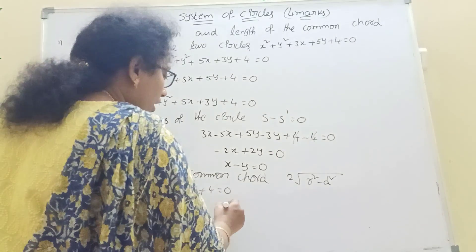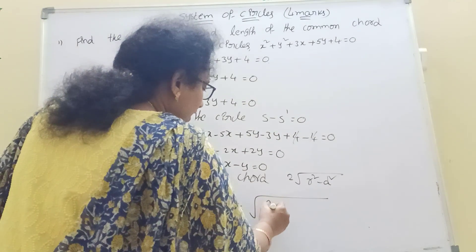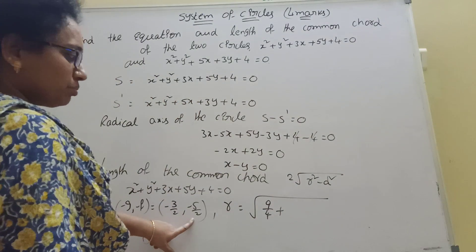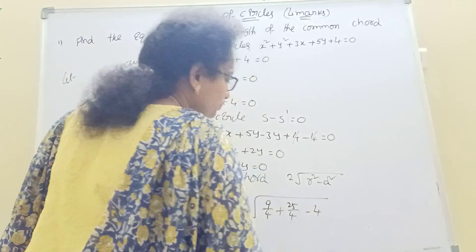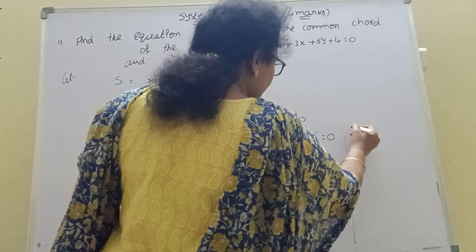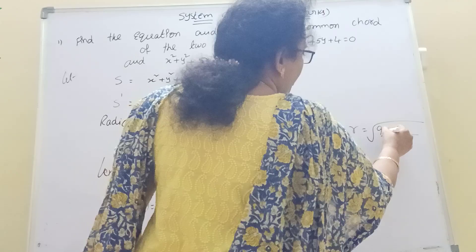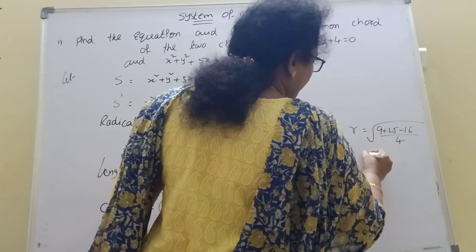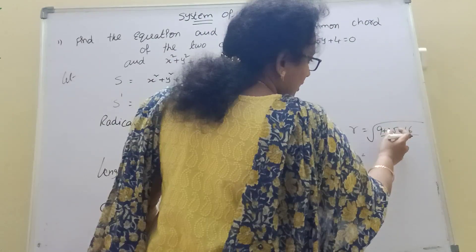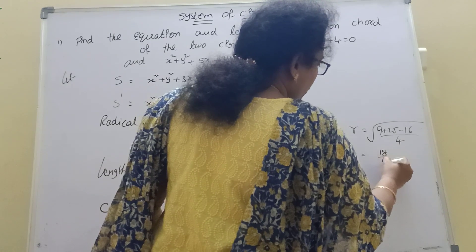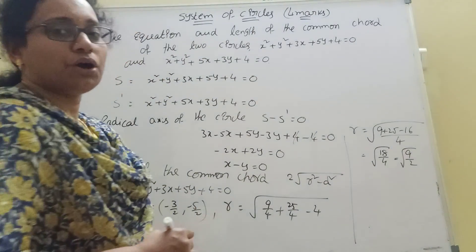Radius: r = root of g² + f² minus c. g² = 9/4, f² = 25/4. So r² = 9/4 + 25/4 minus 4 = 34/4 minus 4 = 34/4 minus 16/4 = 18/4 = 9/2. So r² = 9/2. Root of 9/2. We need perpendicular distance from the line to the center.